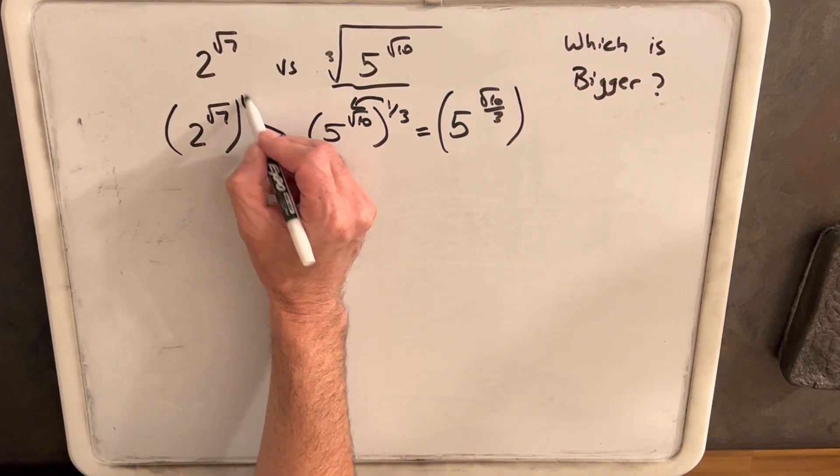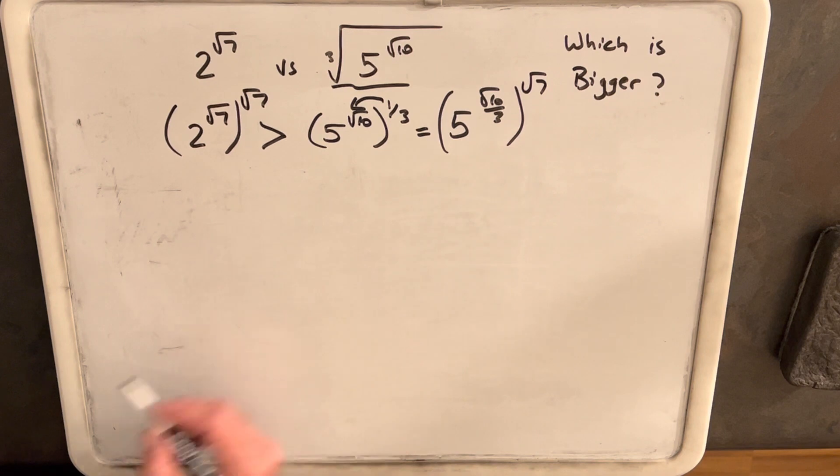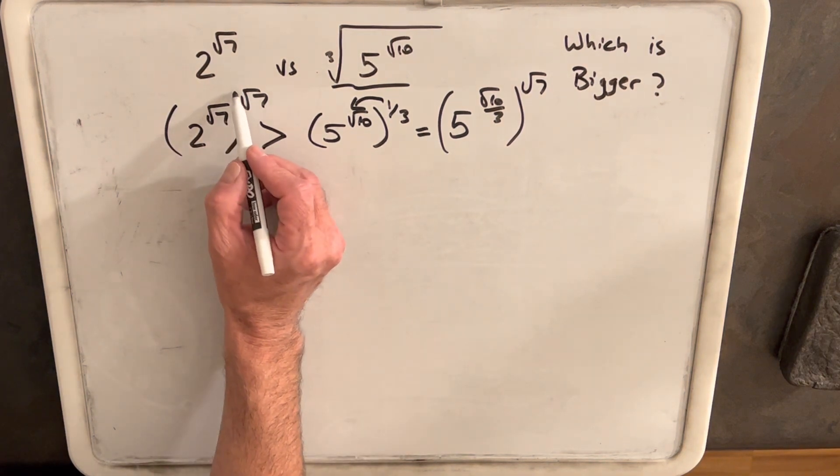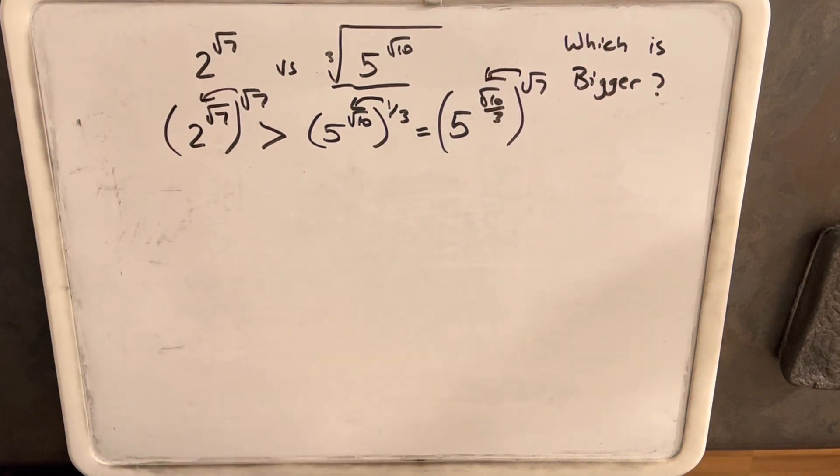Not multiply, we're going to raise both sides to the power of square root of 7. And that will allow us to multiply again inside the parentheses.